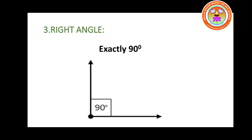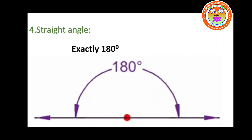Next we will see about right angle. Right angle is nothing but exactly 90 degree. Exactly 90 degree is called a right angle. Next one is straight angle. Exactly 180 degree is called a straight angle. Just it is a straight line. You can observe the diagram, children — just it is a straight line, it represents a straight angle. Exactly 180 degree.